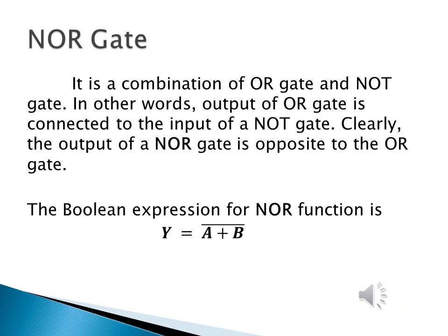The last gate is the NOR gate. It is similar to the NAND gate — it is a combination of the OR gate and the NOT gate. In other words, the output of an OR gate is connected to the input of a NOT gate. The output of the NOR gate is the opposite of the OR gate. The boolean expression for the NOR function is Y equals A plus B-bar.